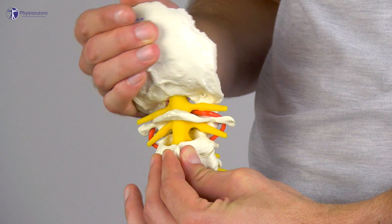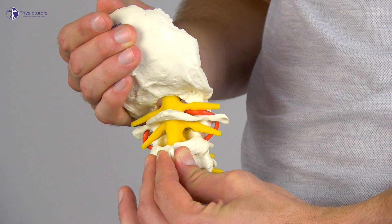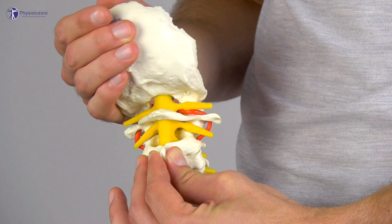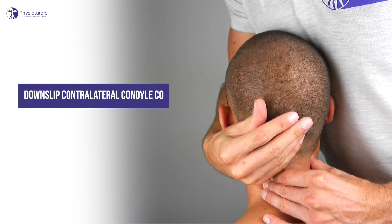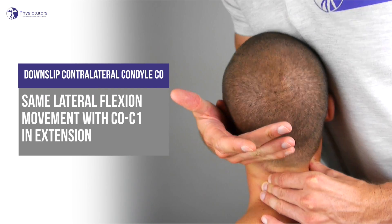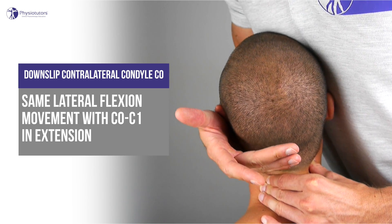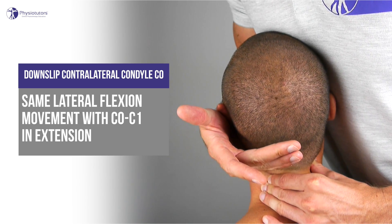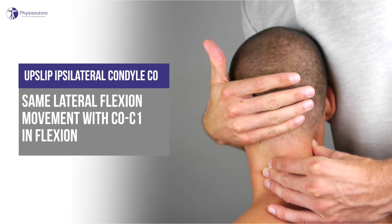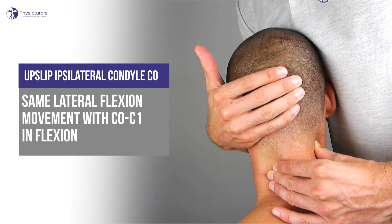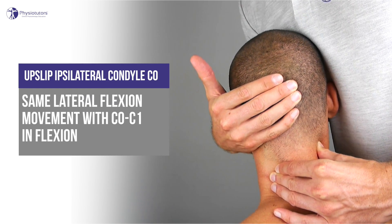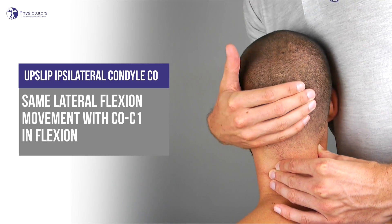Furthermore you can specify if the limitation lies on the contralateral or the ipsilateral condyle of the occiput. To pronounce the downslip movement of the contralateral condyle of C0, perform the same lateral flexion movement with C0-C1 in extension. To pronounce the upslip movement of the ipsilateral condyle of C0, perform the same lateral movement with C0-C1 in flexion.